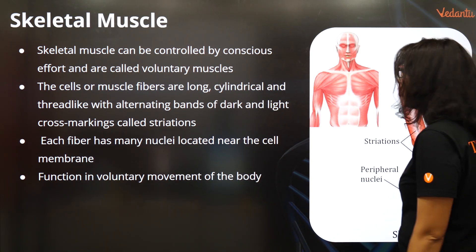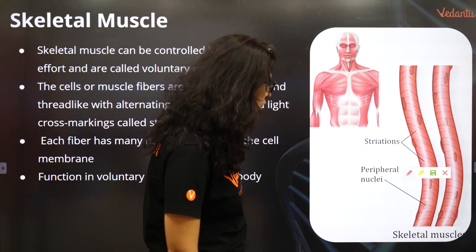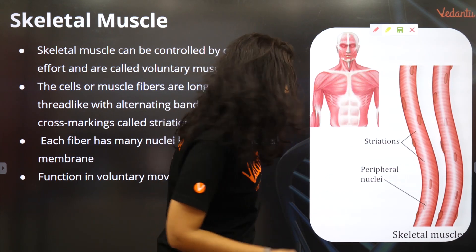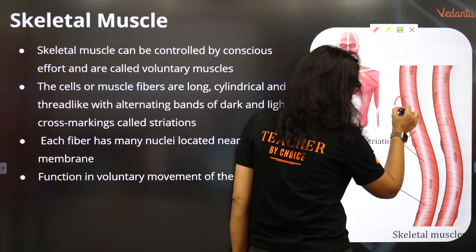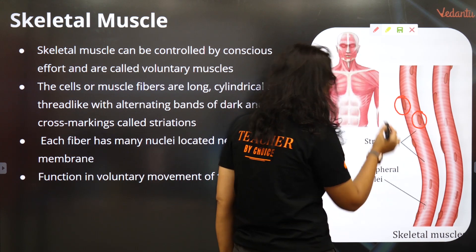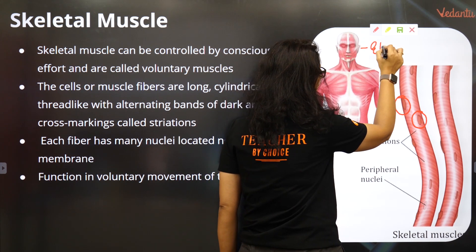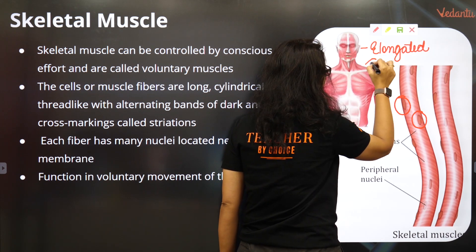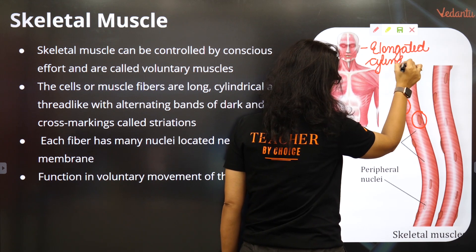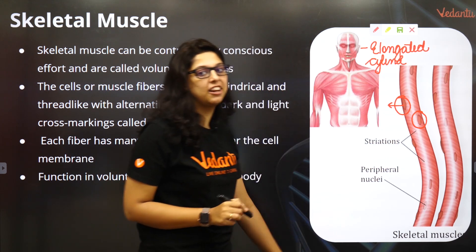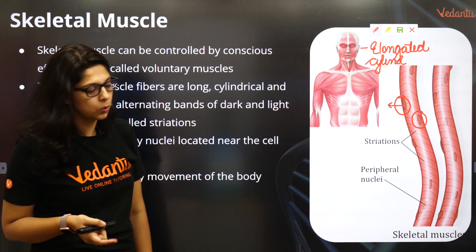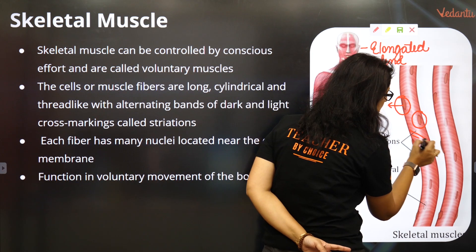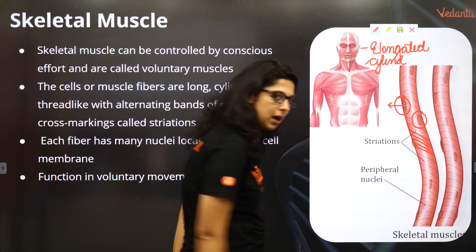As you can very clearly see from this diagram, skeletal muscle is elongated and cylindrical in shape. So it's an elongated, cylindrical shaped muscle. It's got peripheral nuclei — you can all see. It is elongated, long, as well as cylindrical shaped. It's got a peripheral nucleus.